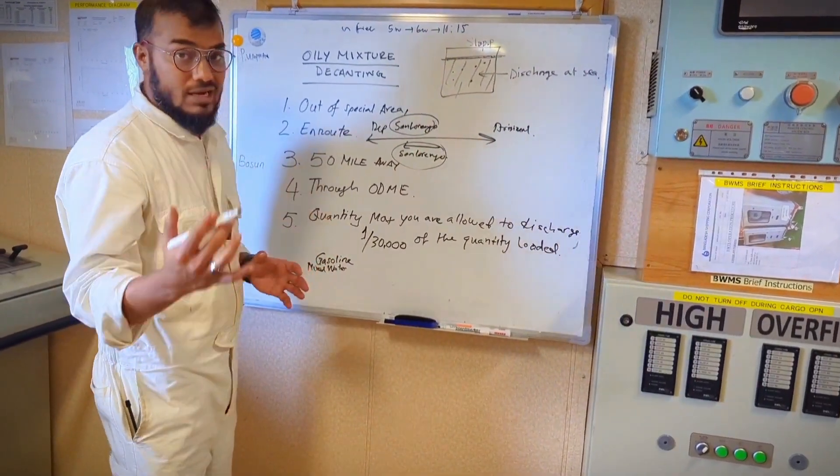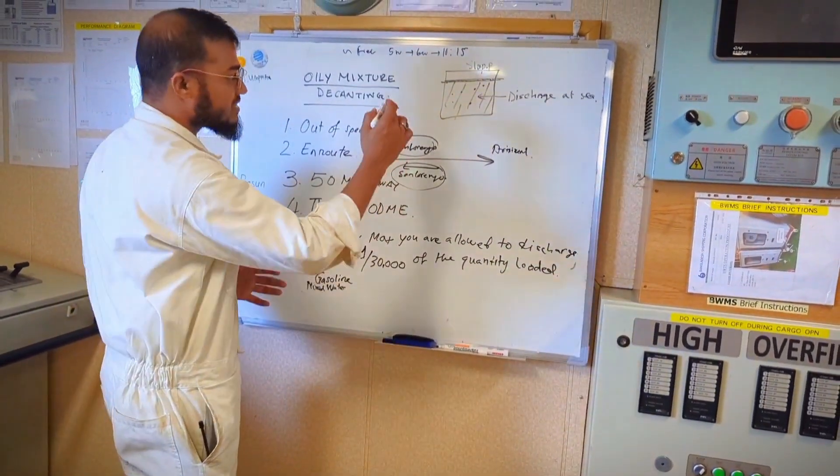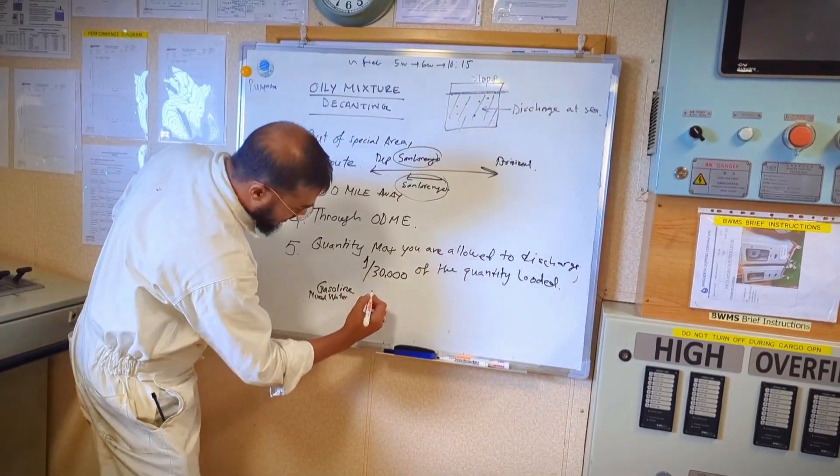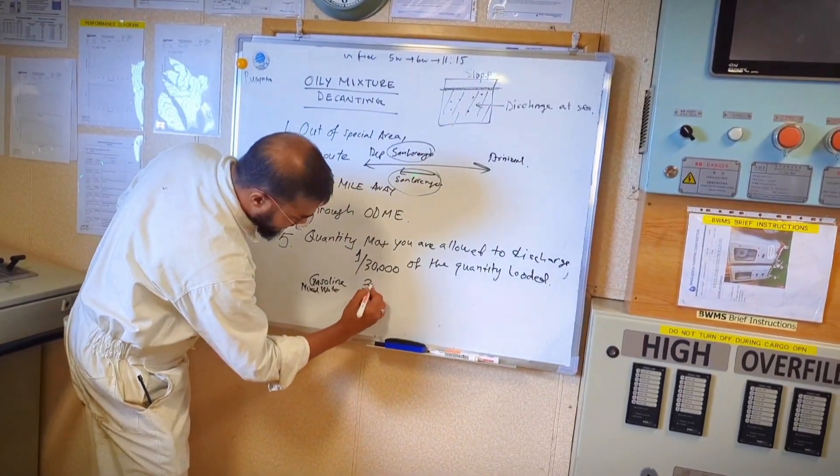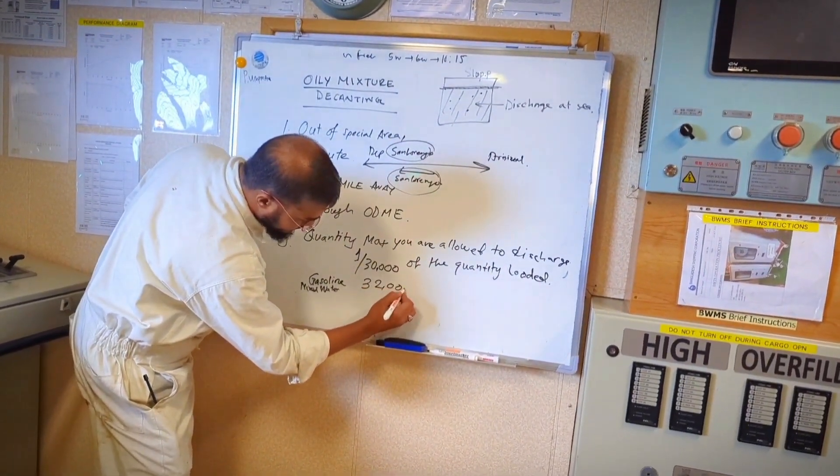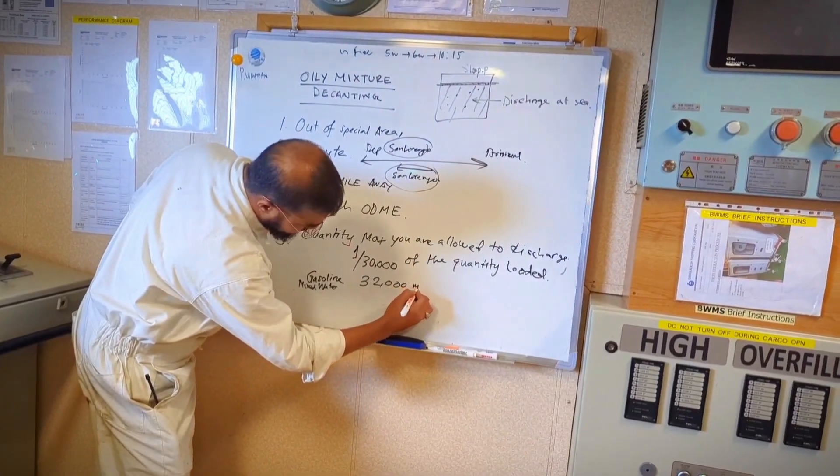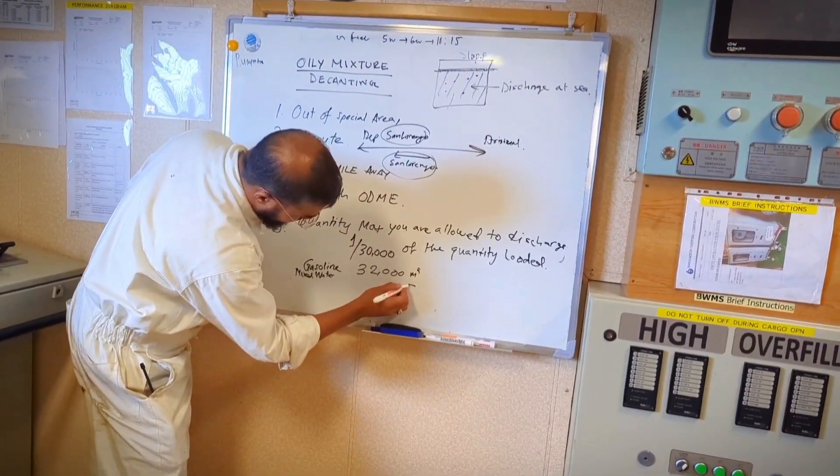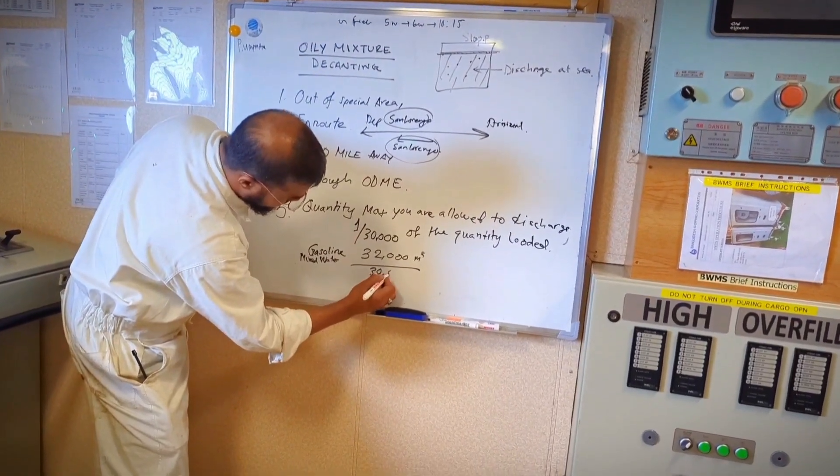I have loaded from Amsterdam and I have discharged in Argentina and I loaded 32,000 cubic, and I have to divide with 30,000.